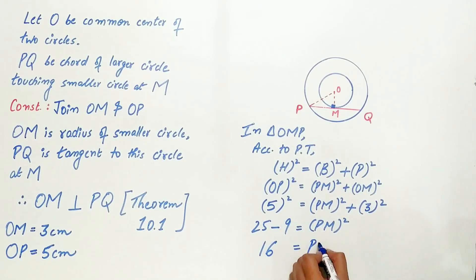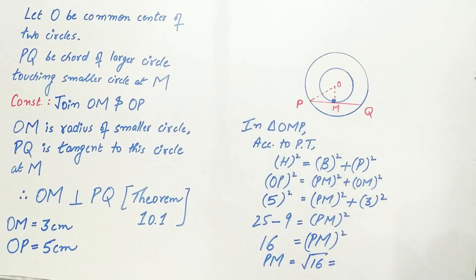16 is equal to PM square. So PM is equal to square root of 16, that is equal to 4 cm.